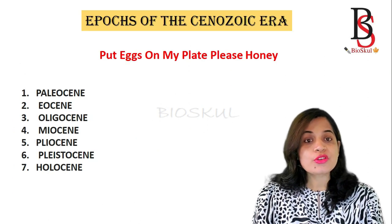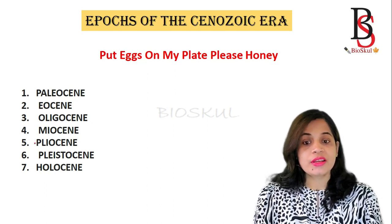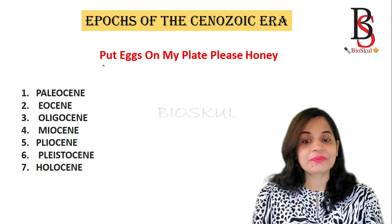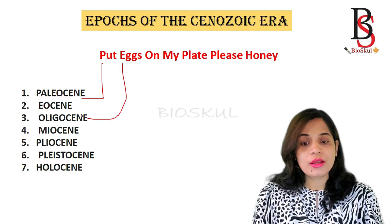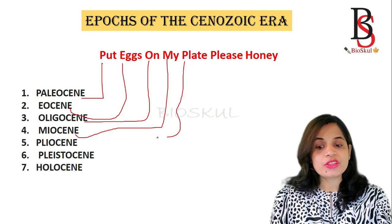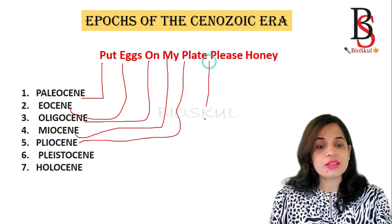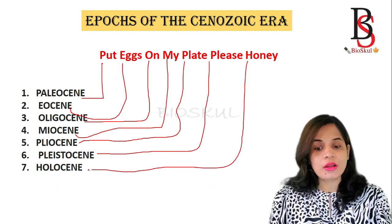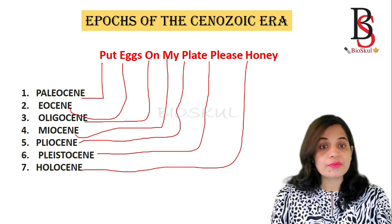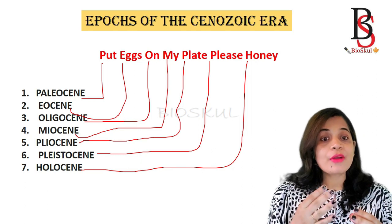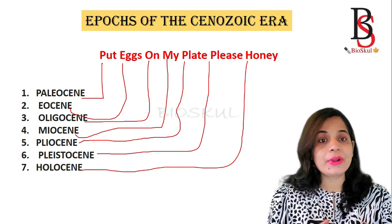The epochs of the Cenozoic era — the Cenozoic era has seven epochs, and the mnemonic for them is: 'Put Eggs On My Plate Please Honey.' P is for Paleocene, E is for Eocene, O is for Oligocene, M is for Miocene, P is for Pliocene, the next P is for Pleistocene, and H is for Holocene.